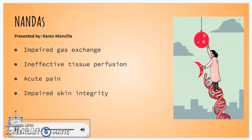Some NANDA diagnoses for sickle cell anemia include impaired gas exchange, related to the decreased oxygen carrying capacity and reduced lifespan of red blood cells, manifested by dyspnea, restlessness, confusion, and cyanosis. Ineffective tissue perfusion related to the vaso-occlusive nature of sickling and inflammatory response can be manifested by changes in vital signs,